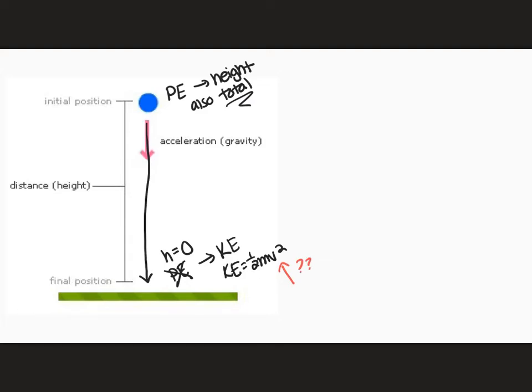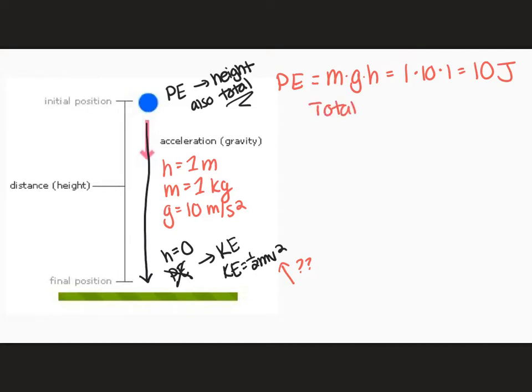So let's say in this situation, let's just have some easy numbers here. Let's say my height is one meter, and the mass of my ball is one kilogram. And for gravity, just to be lazy, we're just going to use 10 meters per second squared. So we're going to start off with our potential energy at the top, which is also our total energy because it's the beginning of the system. So I have mass times gravity times height, which is 1 times 10 times 1. So my potential energy is 10 joules. This means my total energy in the system is also 10 joules.